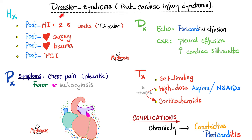A special situation is Dressler syndrome, also known as post-cardiac injury syndrome. This can be caused by post-MI, post-surgery, post-trauma, or post-percutaneous coronary intervention. After MI, if pericarditis develops around three days later, that is not Dressler syndrome — that is probably local spread of inflammation. However, if two to four weeks later pericarditis develops, this is an autoimmune reaction. Post-cardiac surgery, post-cardiac trauma, and post-percutaneous coronary intervention can all lead to post-cardiac injury syndrome. It doesn't have to be one month — it could be slightly less, or two, three, or four months.